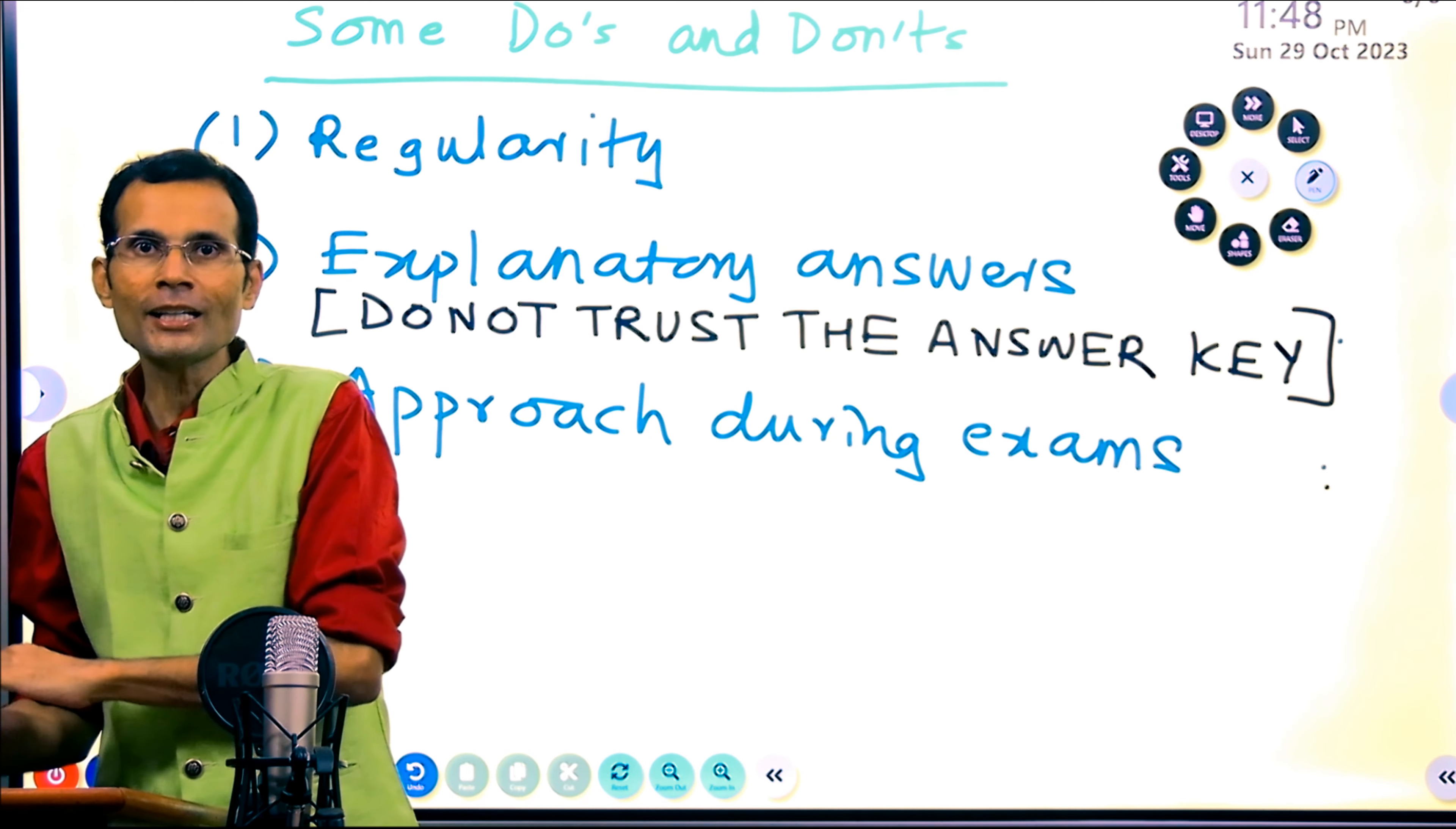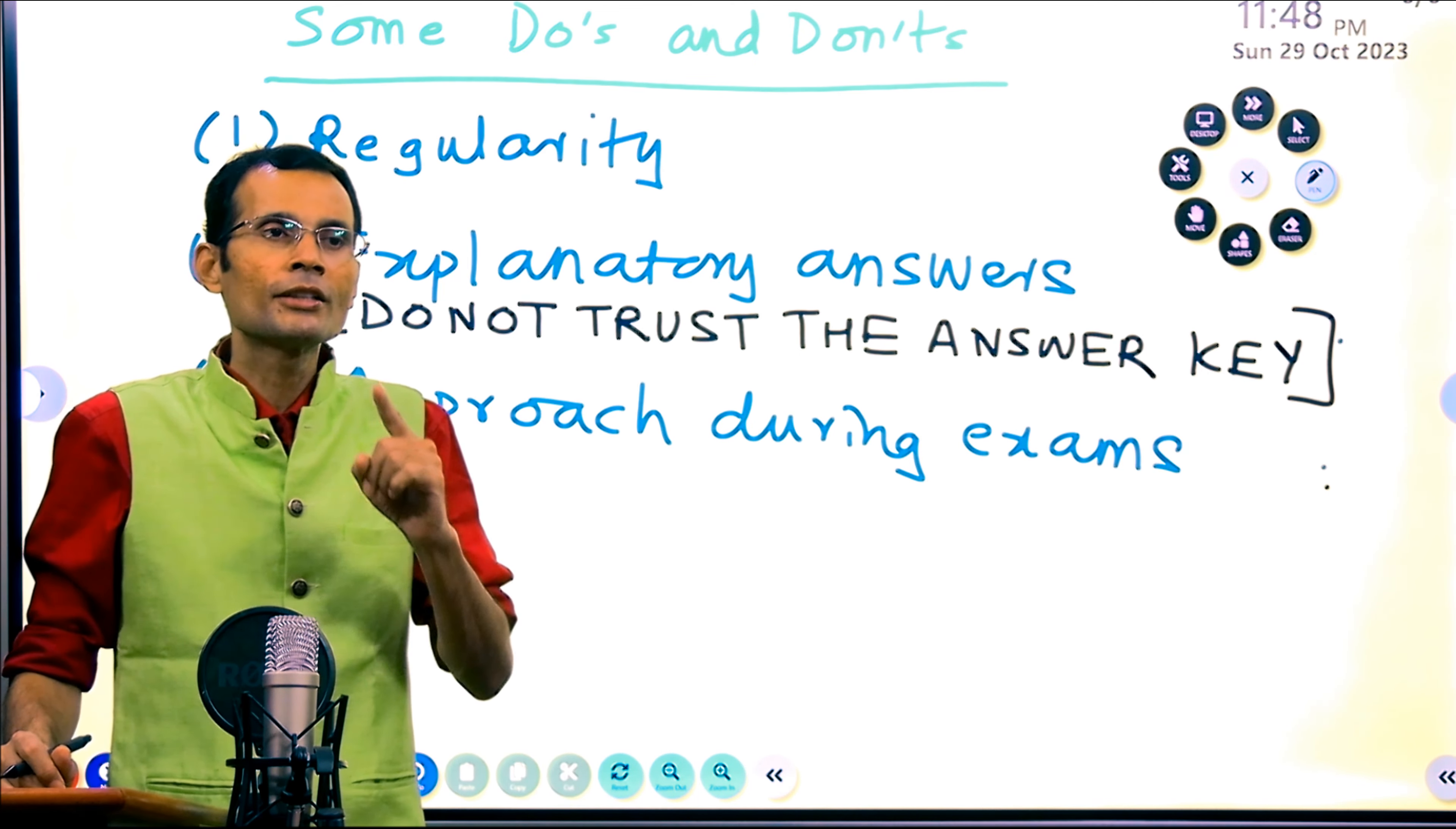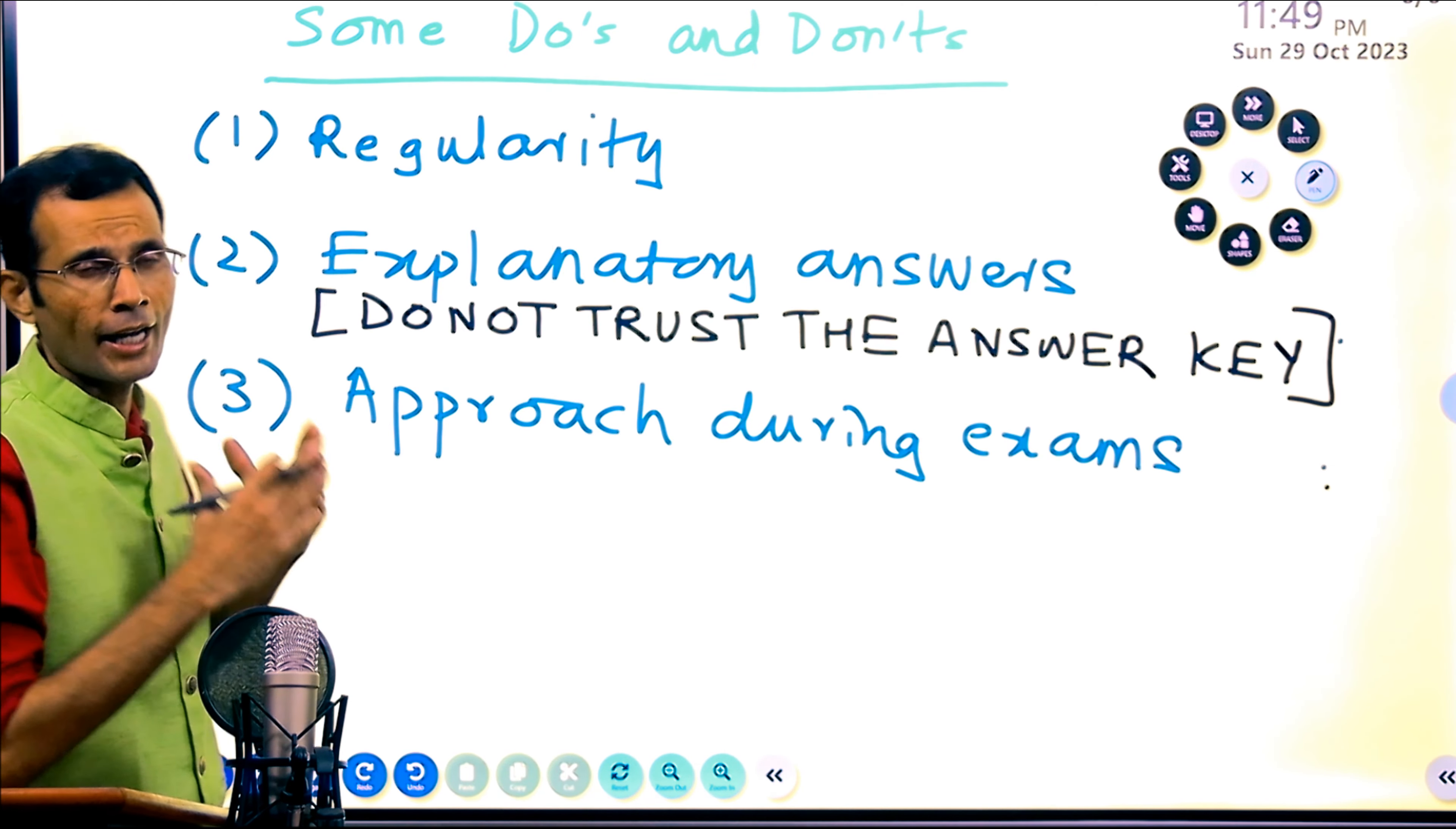So what you should rely on is the explanatory answers of each of those MCQs and understand the topic in the retrograde, in the reverse. You have read the topic once, then you are solving the MCQ on that topic, then explanatory answer, and from the explanatory answer go back once again in a retrograde fashion and understand the topic in its entirety at the end.